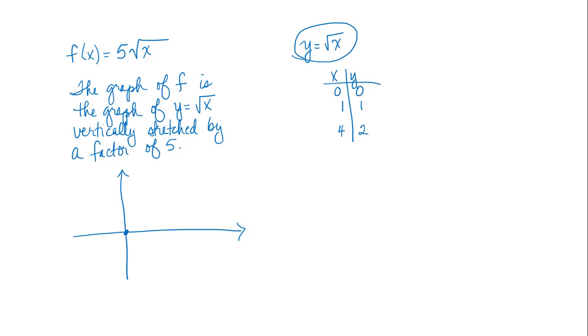Then if I looked at 5 times the square root of x, I'd still have (0, 0) because 0 times 5 is still 0, but now at x equals 1 it would be at y equals 5, at x equals 4, multiplying the 2 by 5 would be 10. So it's going to stretch that graph, that half parabola up, by a factor of 5. So let me know if you have any questions on this concept. Thank you very much.